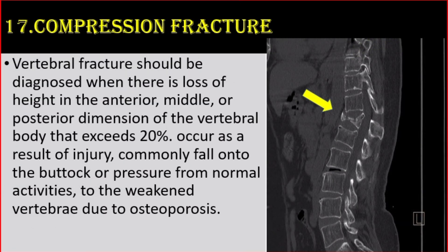Number 17: Compression fracture. A vertebral fracture should be diagnosed when there is loss of height in the anterior, middle, or posterior dimension of the vertebral body that exceeds 20%. It occurs as a result of injury, commonly a fall onto the buttocks, or pressure from normal activities to a weakened vertebra due to osteoporosis.